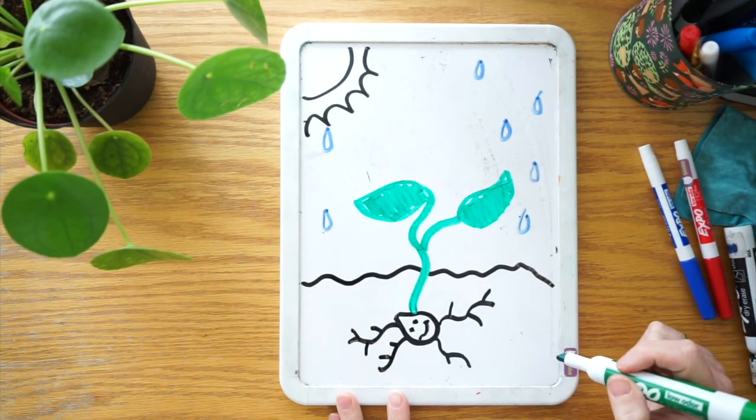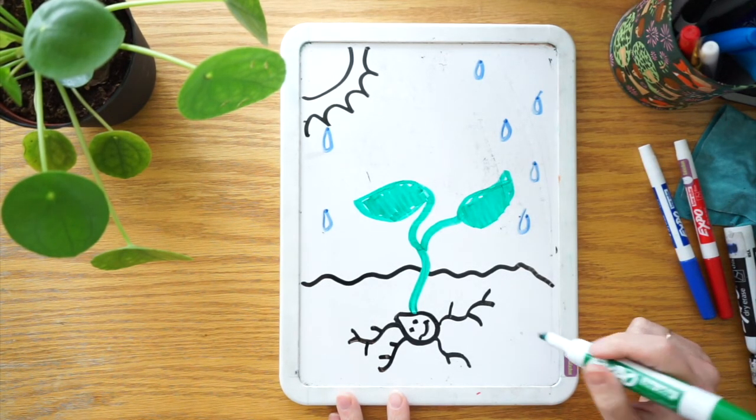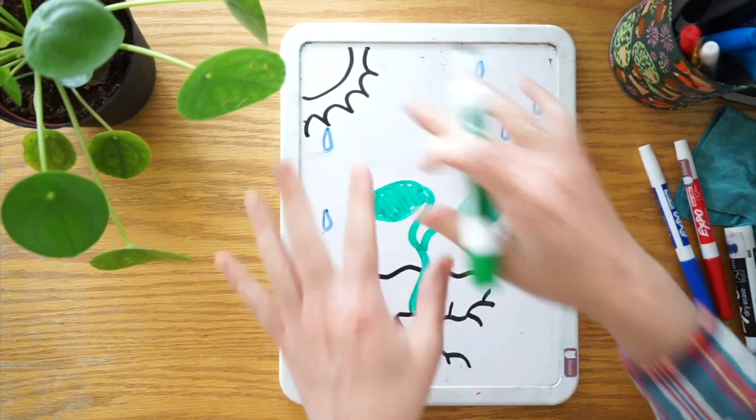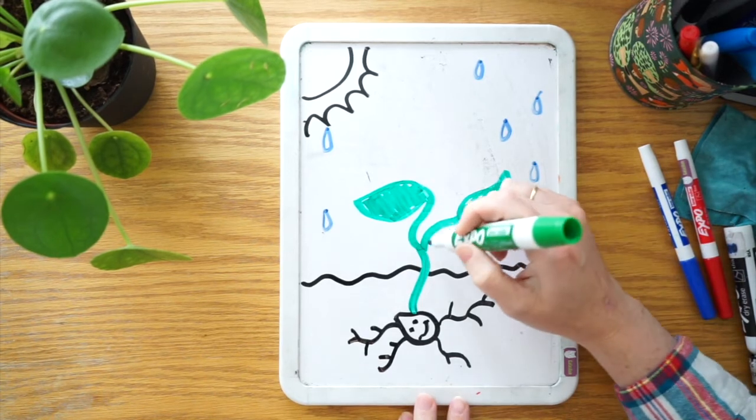Well the seed is very happy with all this. The seed can feel the raindrops. It can feel the warmth coming from the sun. And with that, another sprout comes.